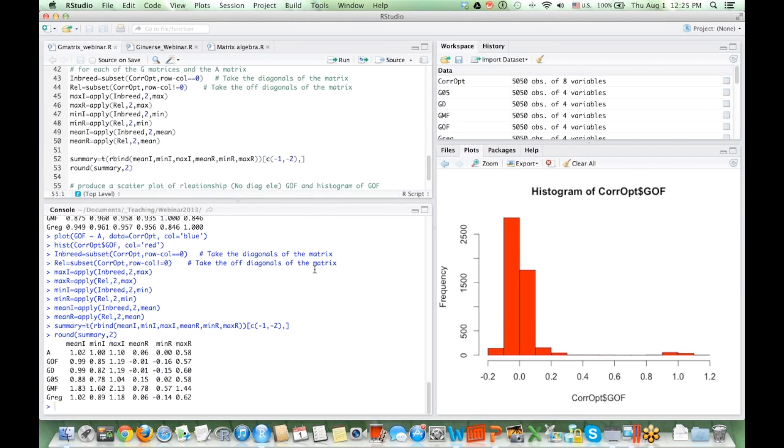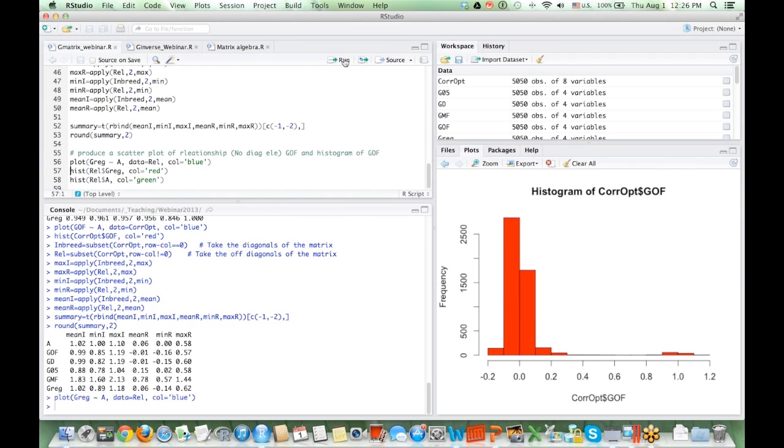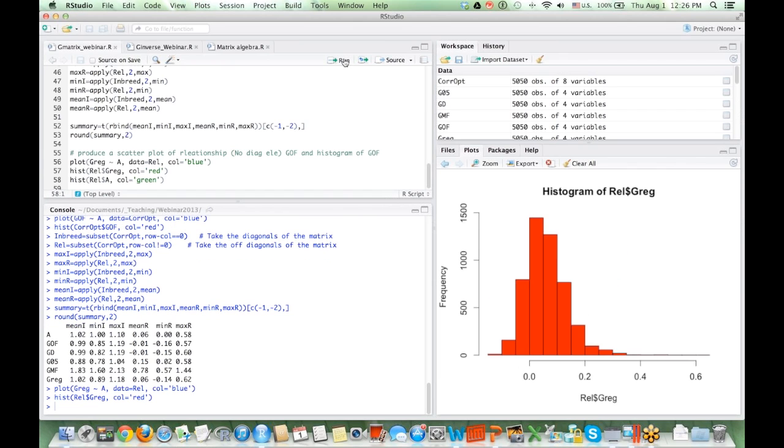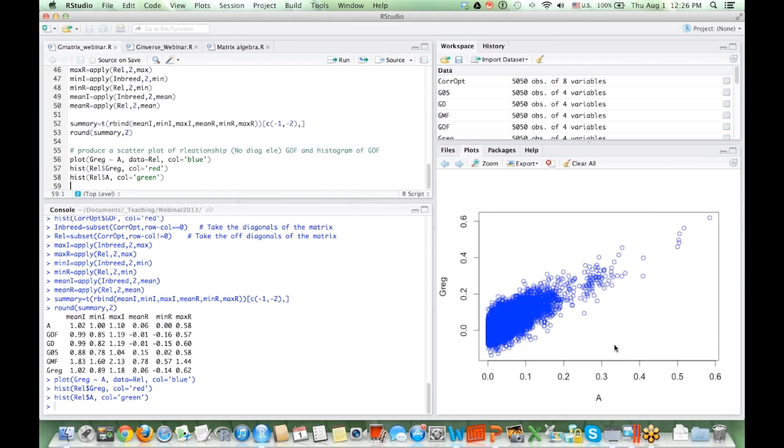So if you look at the mean I, which is the average inbreeding, A and Greg are exactly the same. GMF produces very high inbreeding coefficient compared to A matrix. Again we can use plots and histograms to look at the relationships. So here we have relationship between off-diagonal elements of A and the genomic relationships Greg method, which is regression method.